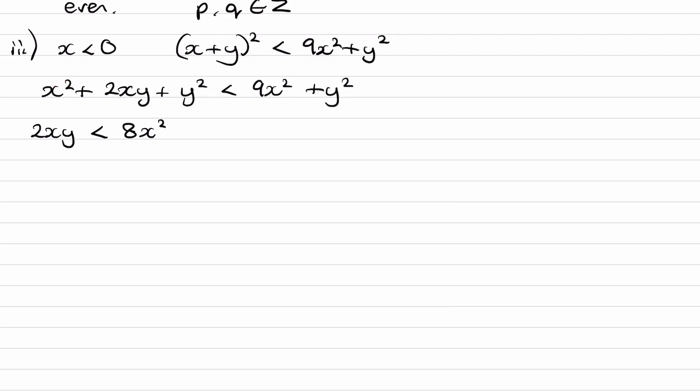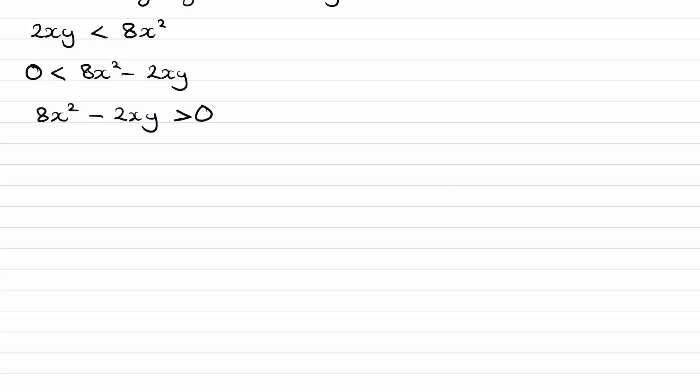I'll bring the 2XY now to the right. So we get 0 is less than 8X squared minus 2XY, which I'll just rewrite as 8X squared minus 2XY is bigger than 0. So just changing the order. I can then divide everything by 2. And then I can factorize out X.